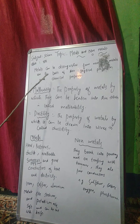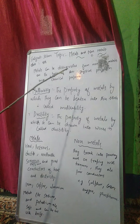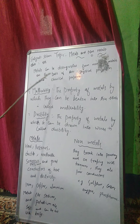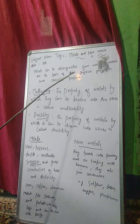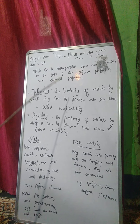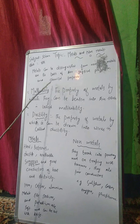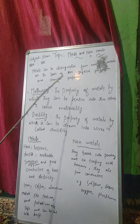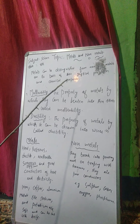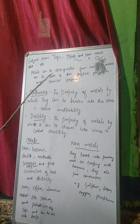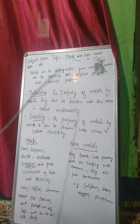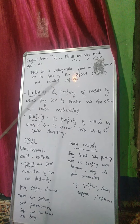Metals can be distinguished from non-metals on the basis of their physical properties and chemical properties. Metals ko hum non-metals se alag kar sakte hai on the basis of their physical properties and chemical properties. Pahle hum physical properties discuss kareenge.